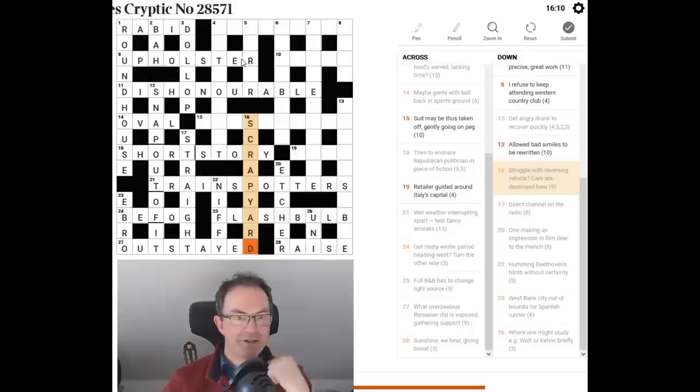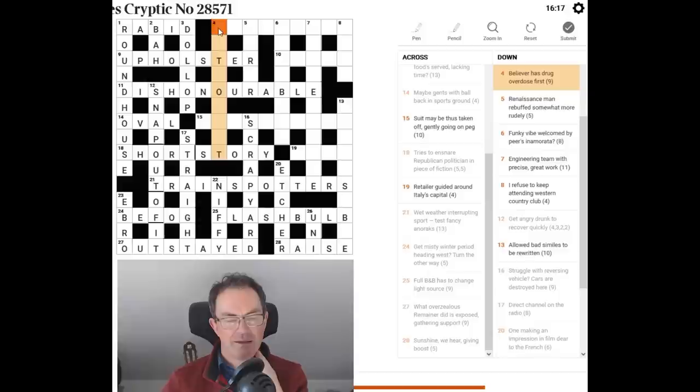So we're still on this incredible run. Of having solved every single clue. First time. Now. I'm going to go for. I'm going to go for four down. Because. I think if I can get a little bit of help for four across. That's good. If I could get four across. Cold. I think we might. We might have a very good chance. But I'm going to try four down.